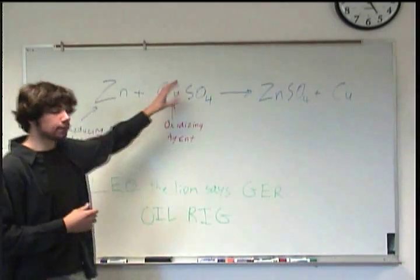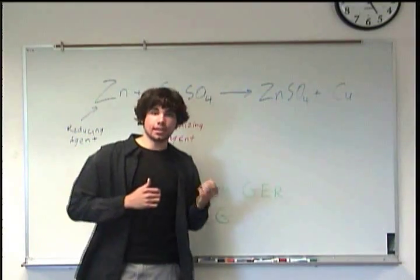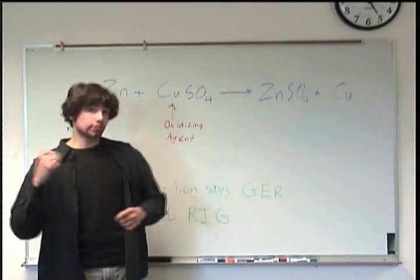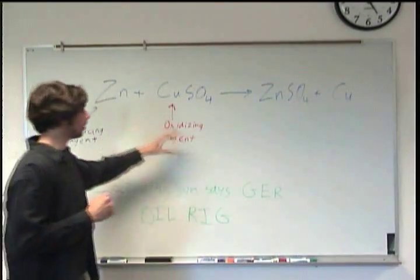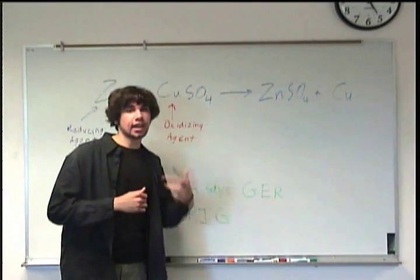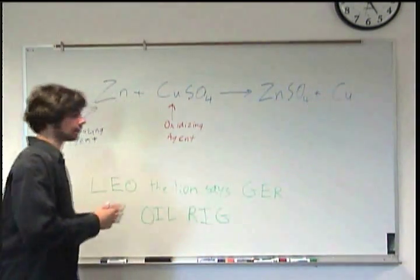So whenever we have an oxidation reduction reaction, we have something that's reduced, in other words it gained electrons. And then we have something that was oxidized, which lost the electrons. So in this particular example, we have the reducing agent and the oxidizing agent, which are the parts that do the reducing and the oxidizing.